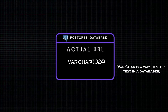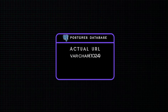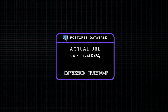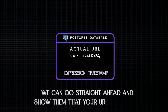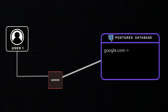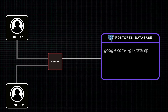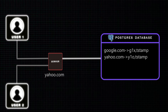Alongside the URL and its shortened form, we also need an expiration timestamp — because a URL can be valid only for a particular time. After expiration, if the user makes a request, we show them that the URL has expired. For example, a user makes a request for google.com, we save it as 'g1x' with a timestamp. When another user comes in with the same URL, we can check if it already exists in the database and return it without saving again.